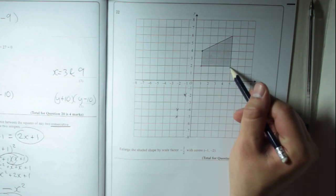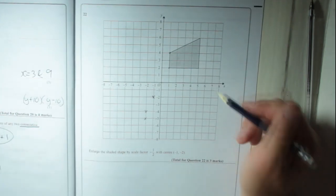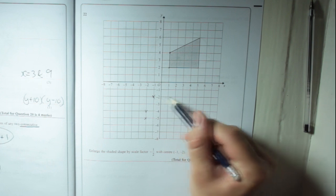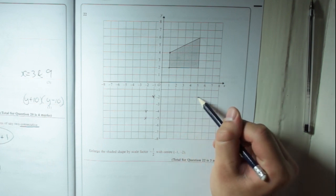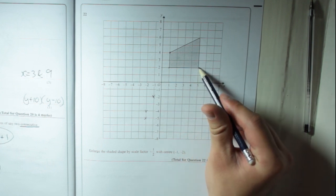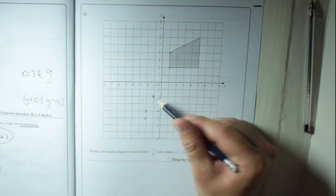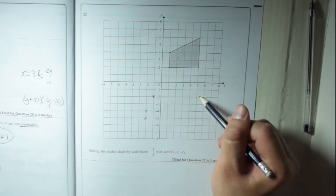Now to that point there, it is 6 right, 4 up. So we're going to go 3 left, half of 6, and 2 down.